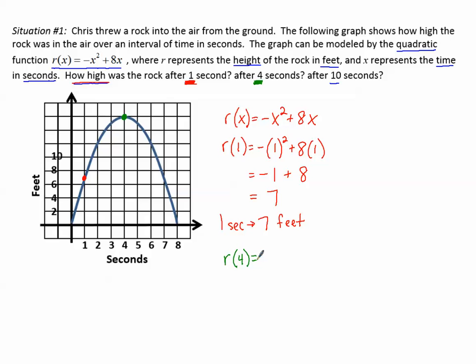r of four equals negative four squared plus eight times four. Four squared makes 16, and I put the negative in front. Eight times four makes 32. Negative 16 plus 32 makes 16. So after four seconds, the rock was 16 feet high.